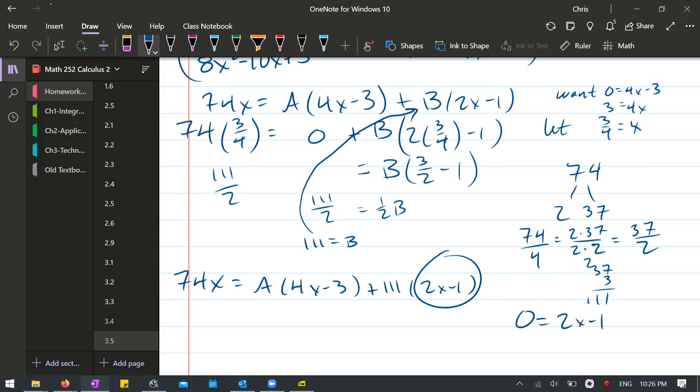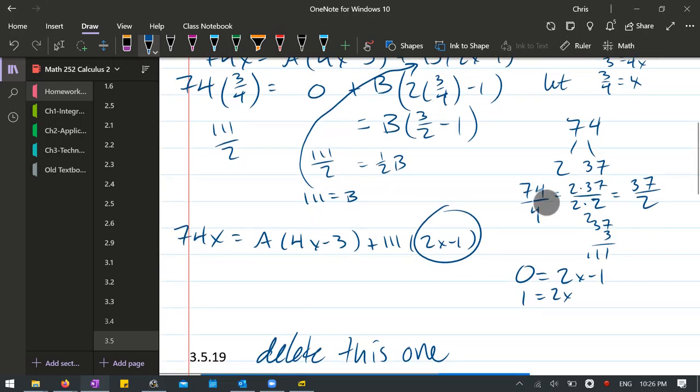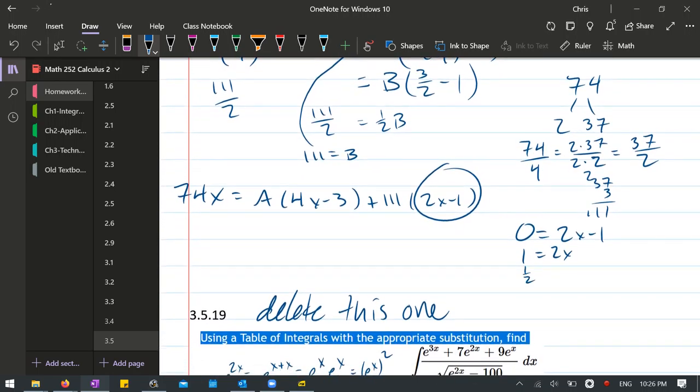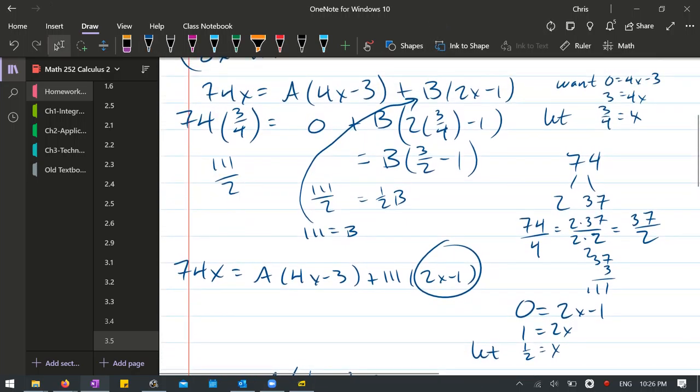0 equals 2x minus 1. Add 1, divide by 2. So you're going to let 1/2 equal x. Now everywhere you see x, of course you're zeroing out the term I already circled, but 1/2 is going to go in there. 1/2 is going to also go in there. And you're going to figure out what A value you need.